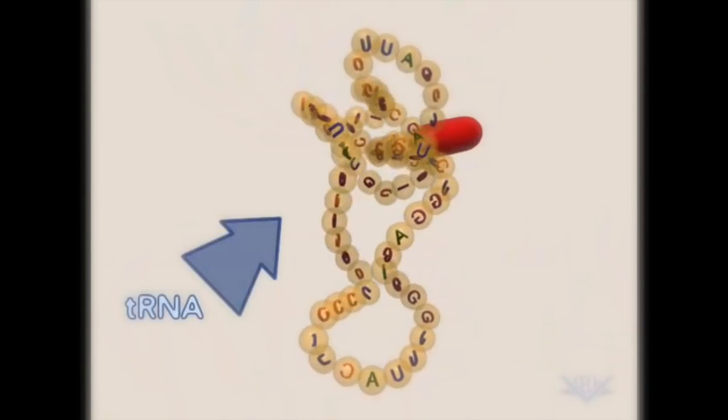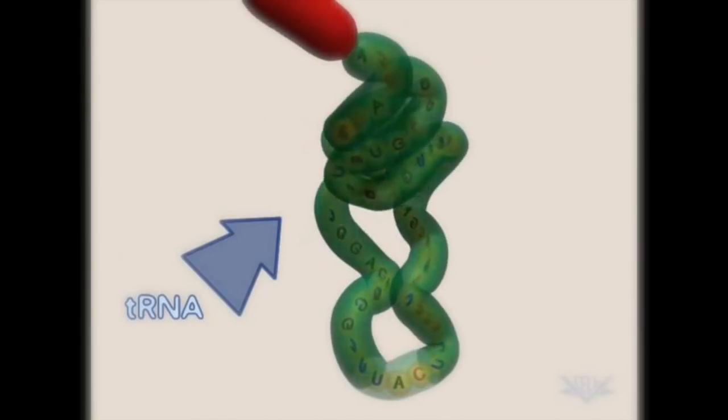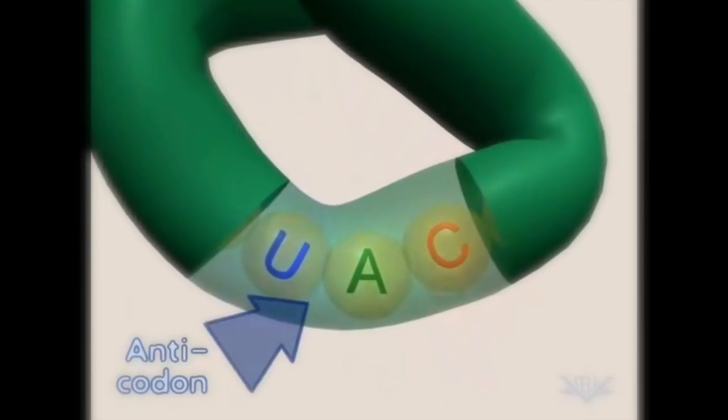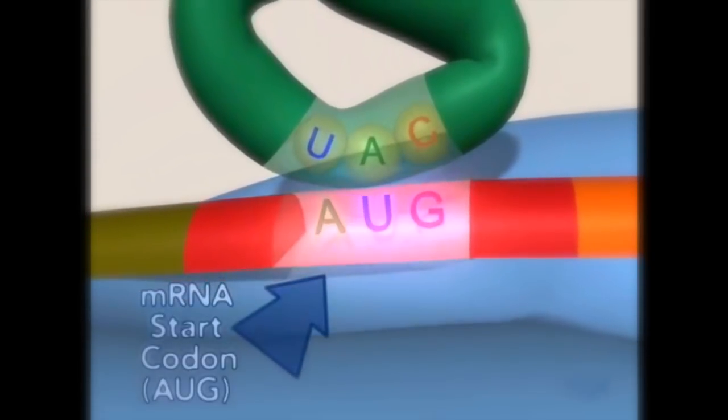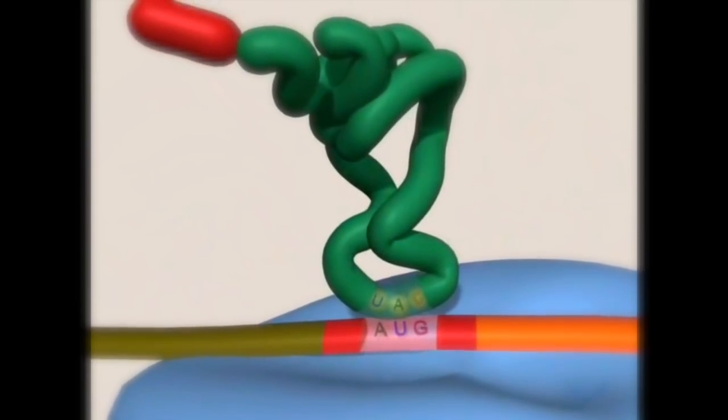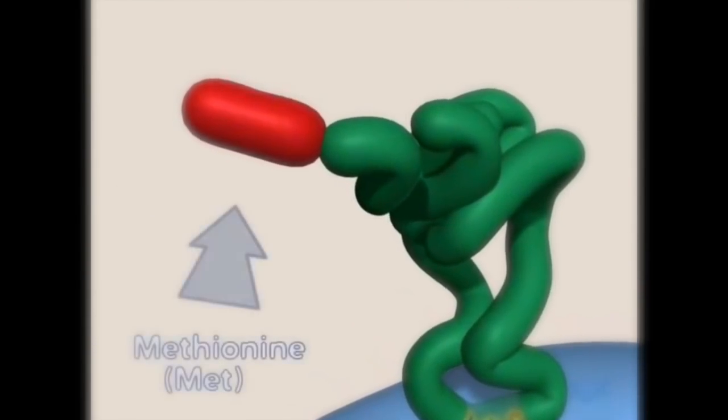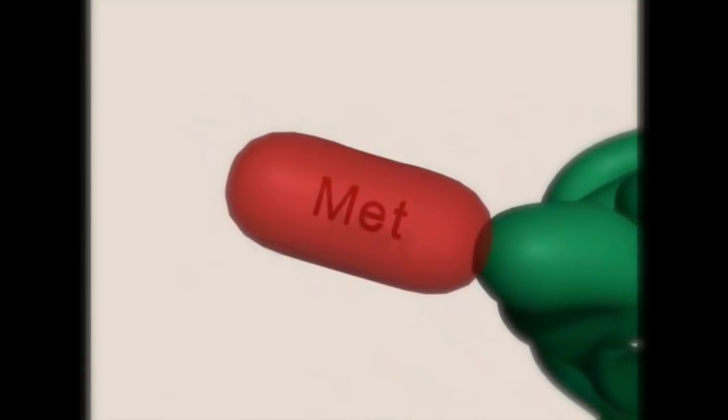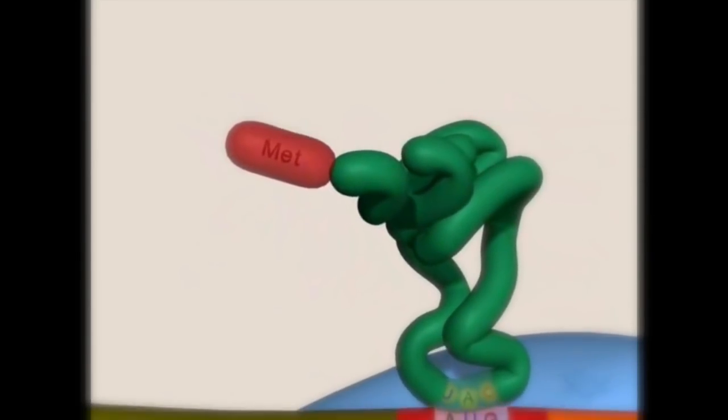tRNA is another key molecule. It contains an anticodon that is complementary to the mRNA codon to which it binds. The first mRNA codon is typically AUG. Attached to the end of the tRNA is the corresponding amino acid. Methionine corresponds to the AUG codon.